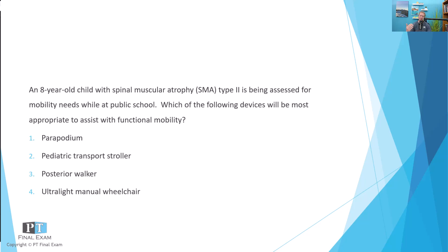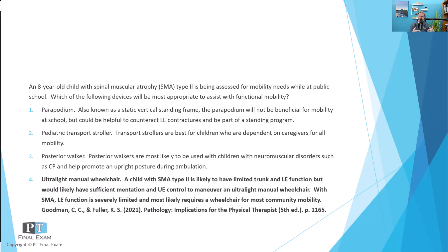The question asks: for an eight-year-old child in public school, which device best assists with functional mobility? Anytime you're talking assistive devices, consider what maximizes the patient's function. In this case, a child with spinal muscular atrophy is most likely to benefit from an ultralight manual wheelchair. This gives them the ability in a public school setting — typically limited distances over flat, even surfaces.